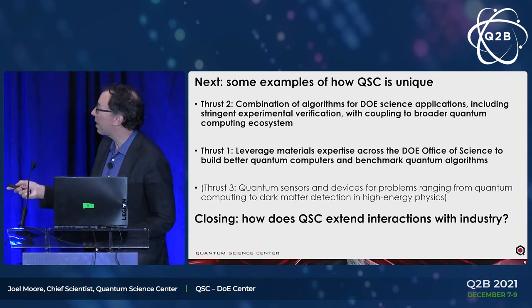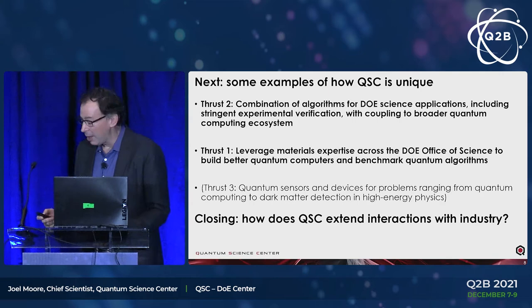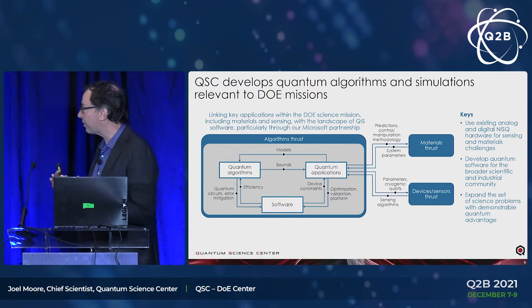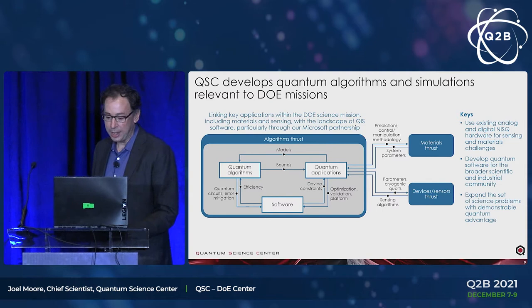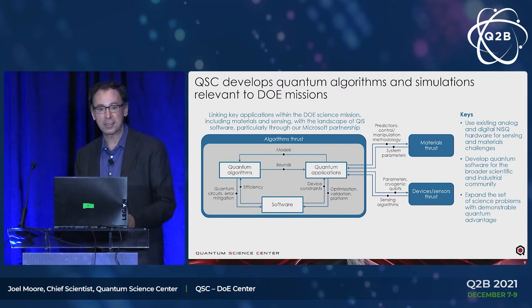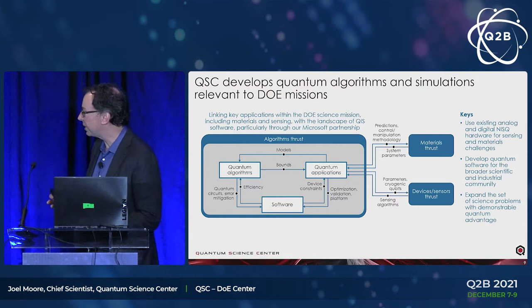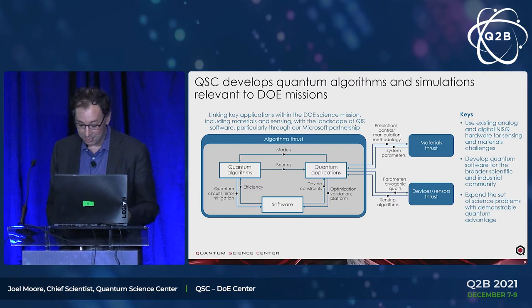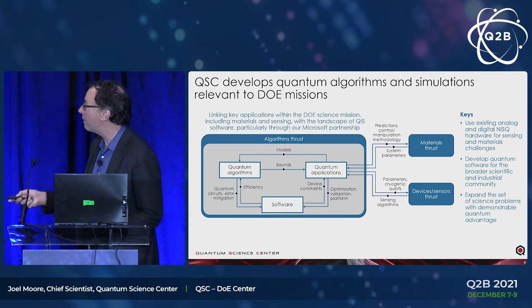Once I've talked about how we're unique — partly what we're going to do, but also a few results we already have — I'll close with a couple of slides about our interactions with industry. The way our picture of quantum algorithms works: we would like to be the link between the applications in the DOE landscape and the larger world of quantum software. We're partners with both Microsoft and IBM, in addition to startups of different scales.